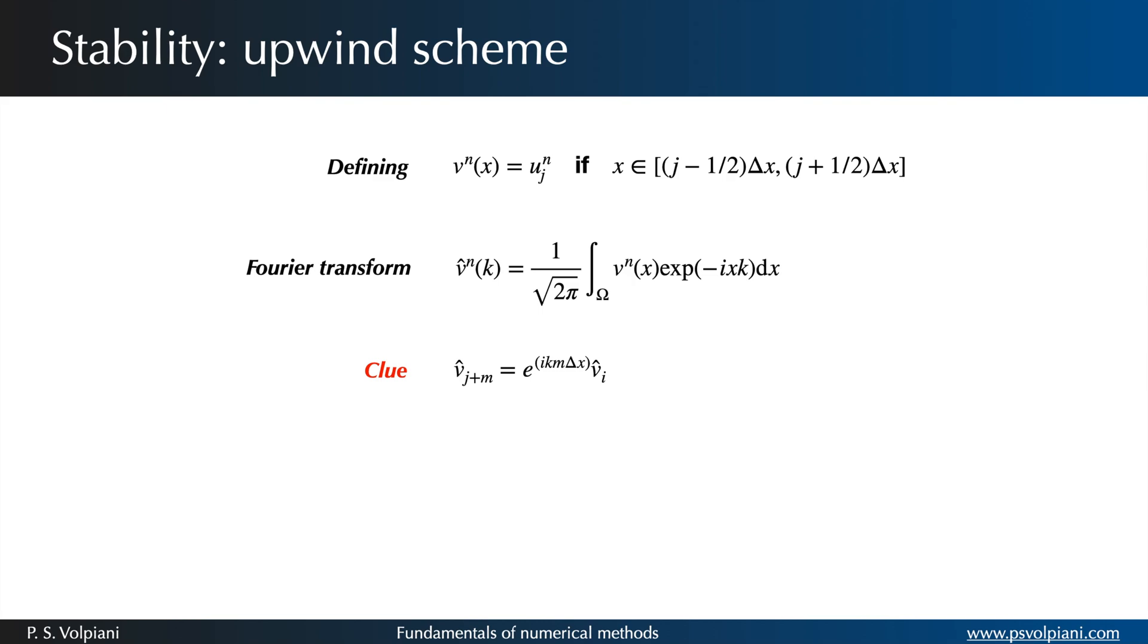In this method we have to define the function v and its Fourier transform. Applying the Fourier transformation to the discretized scheme and knowing this special identity we obtain the following equation.